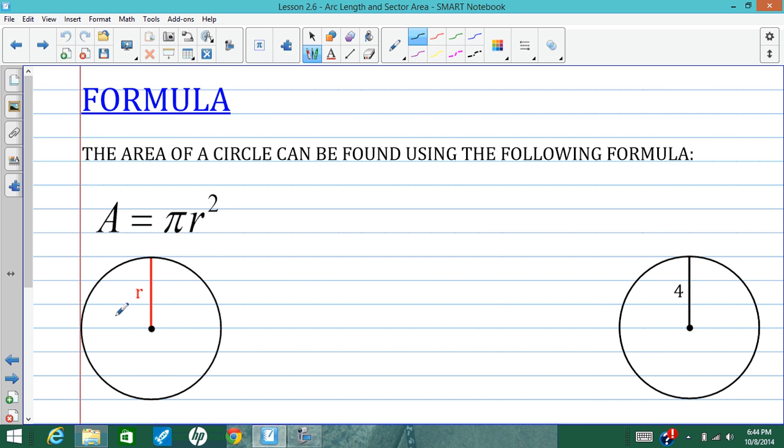So here's our example circle. R is the radius. We just plug that value in for R here, square it, and multiply it by pi.